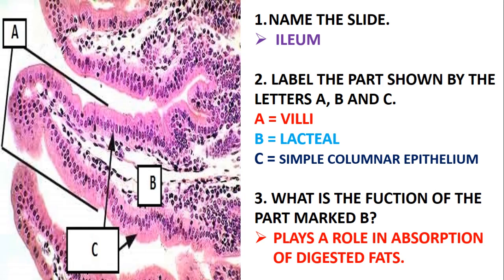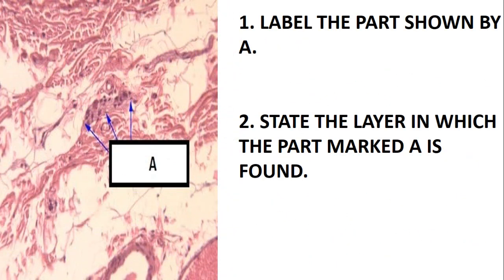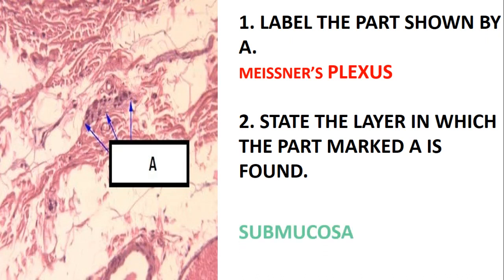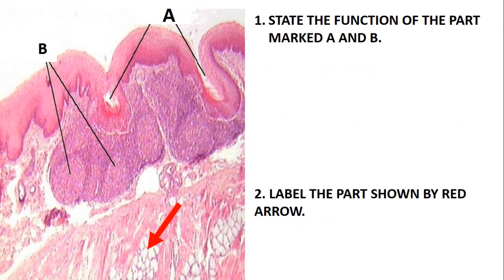What is the function of the part marked B? It plays a role in absorption of digested fats. Fats are broken down into small pieces and are normally absorbed in the lacteal. Label the part shown by A — this is just the Meissner's plexus. This plexus is similar to the myenteric plexus, but the difference is that Meissner's plexus is normally found in the submucosal layer.